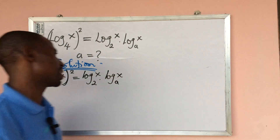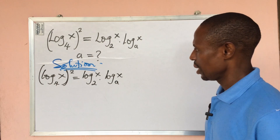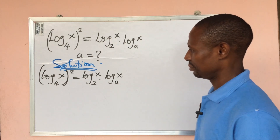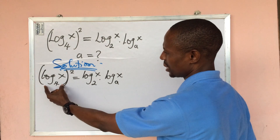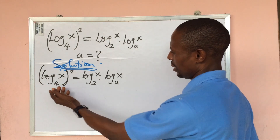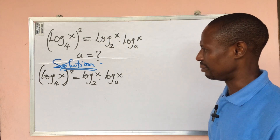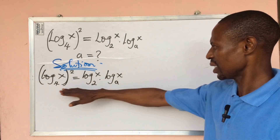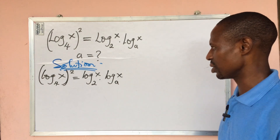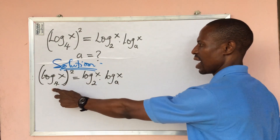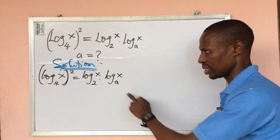If you take a good look at this logarithm expression, we cannot bring out a quadratic equation from it directly. Why? Because here we are having a different base, and here we're having a different base — so we have different bases throughout.